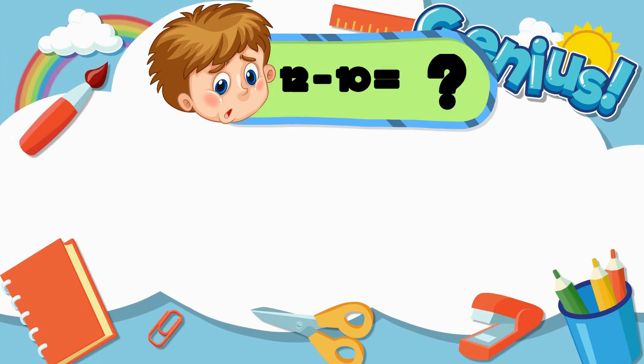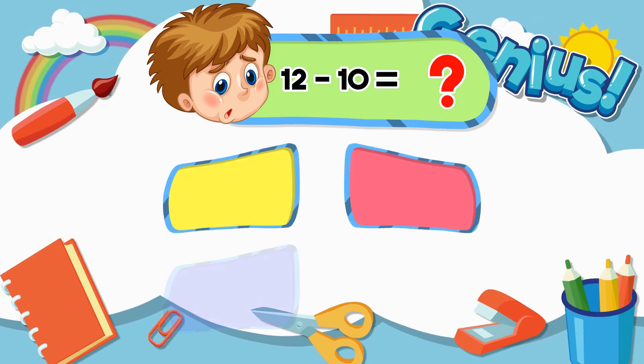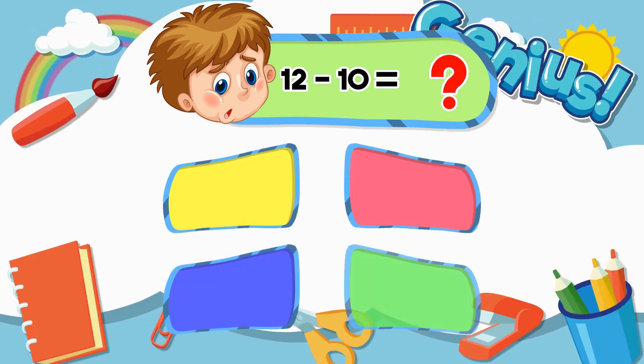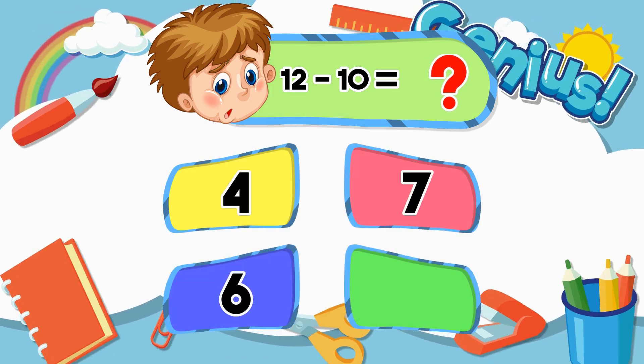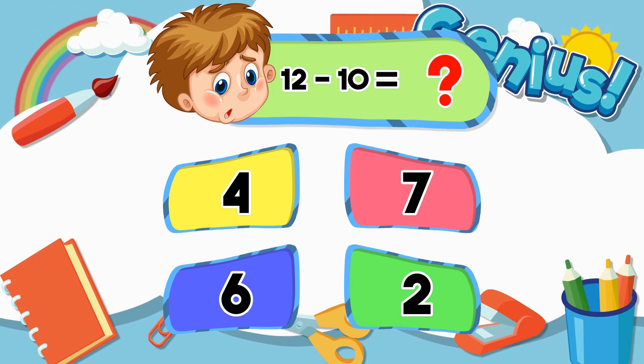What is 12 minus 10? Options: 4, 7, 6, 2. Answer: 2.